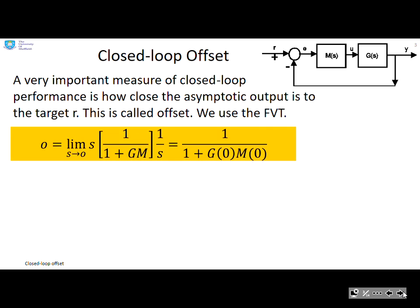We use the final value theorem to work out the offset. The offset is given by the limit as S goes to zero of S times one over one plus GM times one over S. And this is normalized for a target of one. And you can simplify that to a formula like that if you want to be mathematically a bit simple.